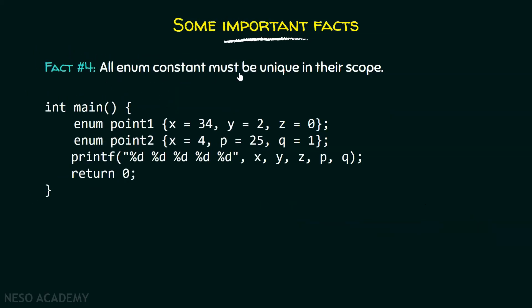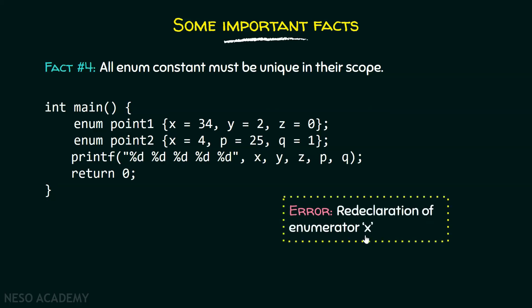Fact number four: all enum constants must be unique in their scope. Here we have enum point one and enum point two — two different enumerators declared within the same scope. Enum point one has names x, y, and z, and enum point two has x, p, and q. Redeclaring x in point two is not allowed, and we get the error: redeclaration of enumerator x. Redeclaration of a name within the same scope is not allowed.